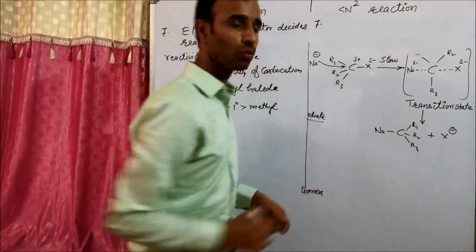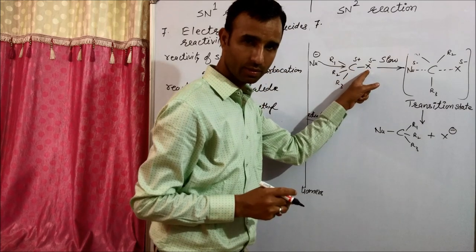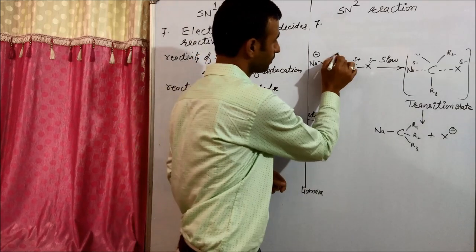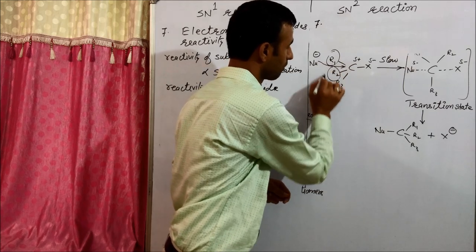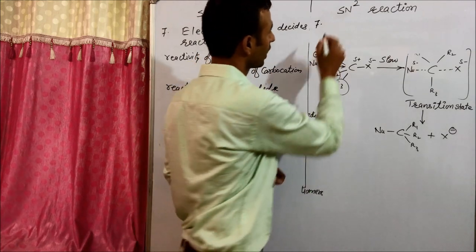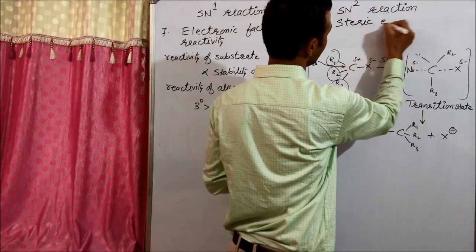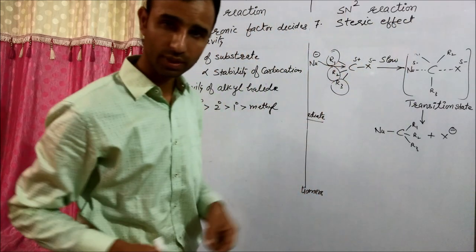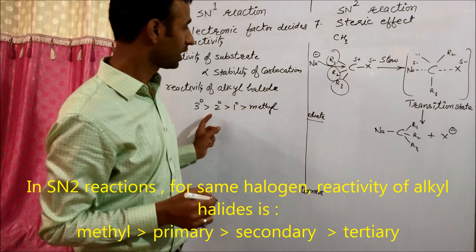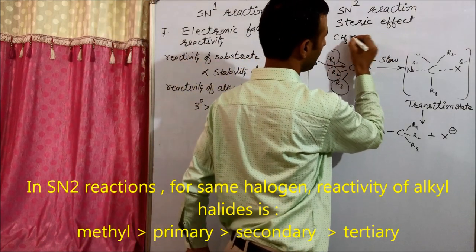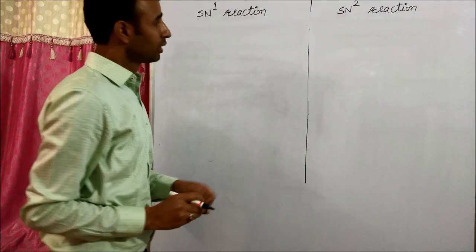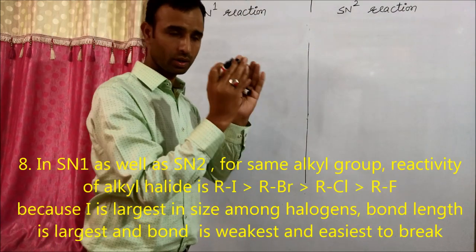In SN2, the C–X bond breaking does not occur as a separate step. The nucleophile attacks from the back side, so if the groups are bulkier, attack is more difficult. This size effect is known as the steric effect — steric hindrance is minimum in methyl halides. Therefore, reactivity of alkyl halides in SN2 is the opposite: methyl > primary > secondary > tertiary.